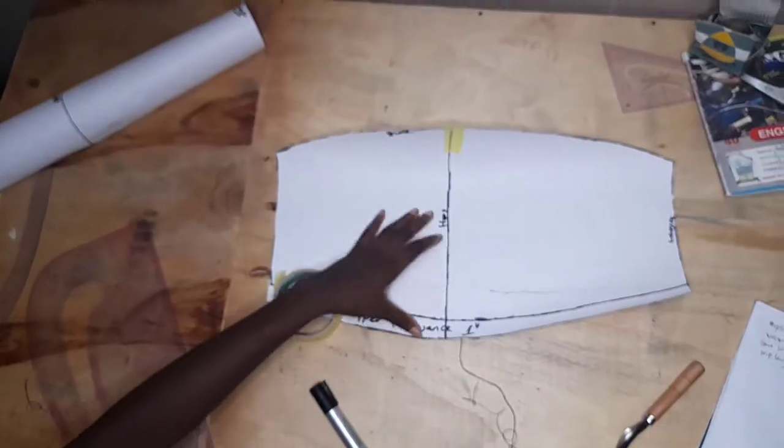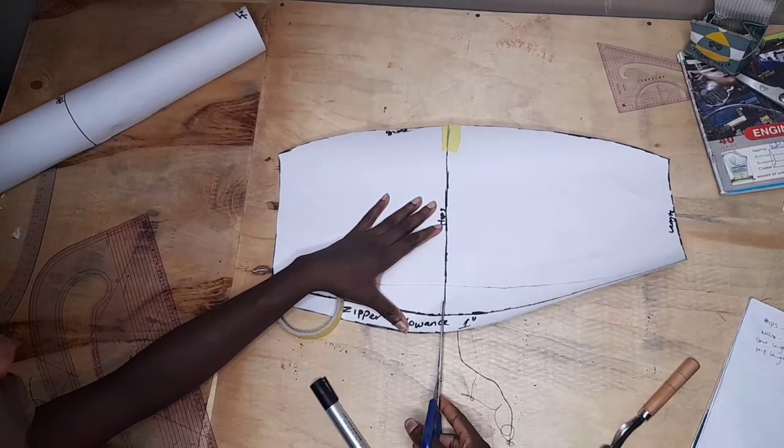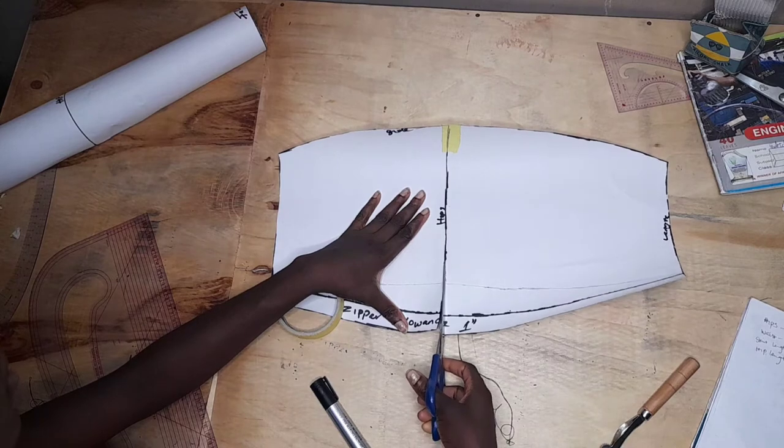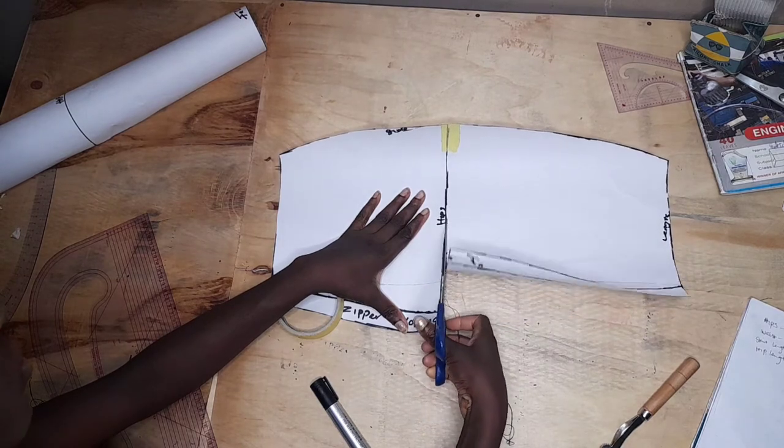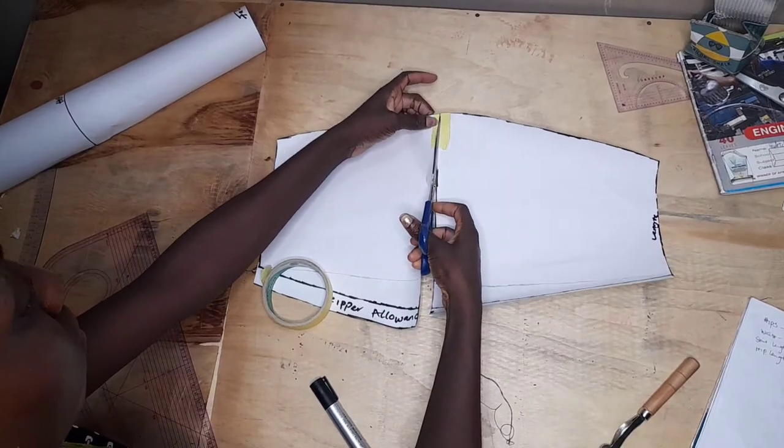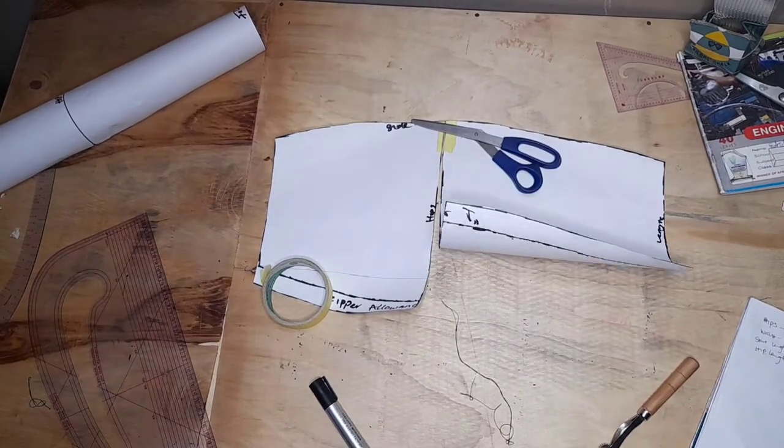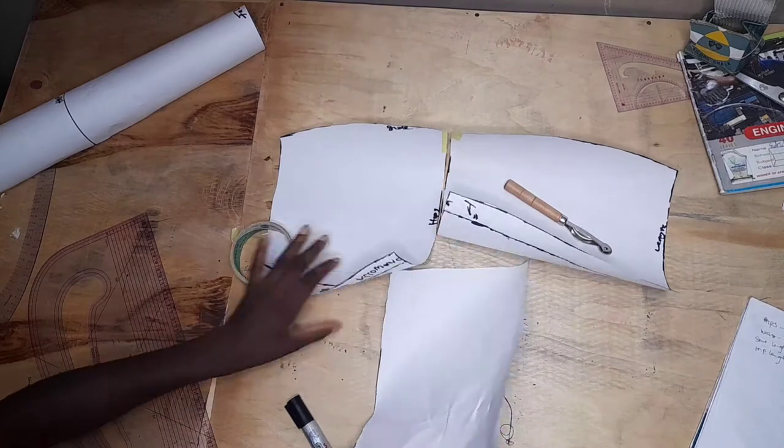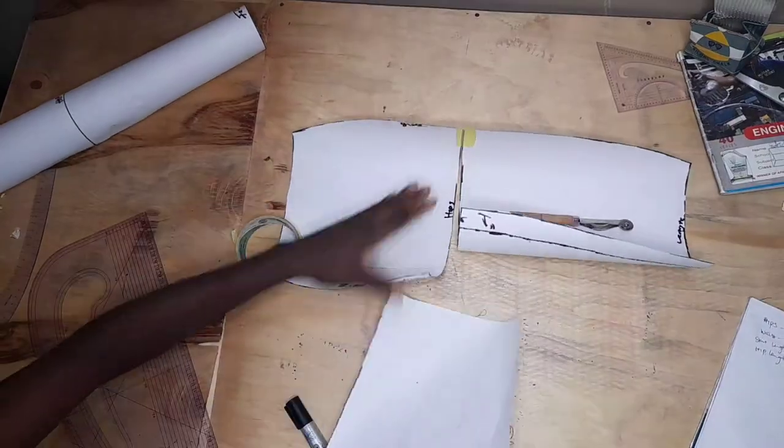The last step we need to take is to slash and spread your hip line. That's where your bump is going to be sitting. After slashing and spreading, you're going to spread it out, so one point five inches or one inch, and you add another pattern paper to cover it up.